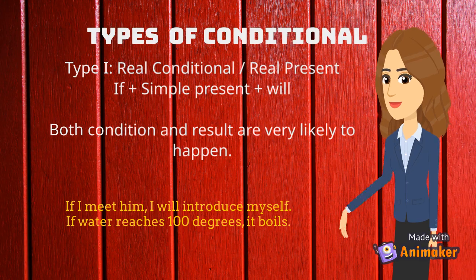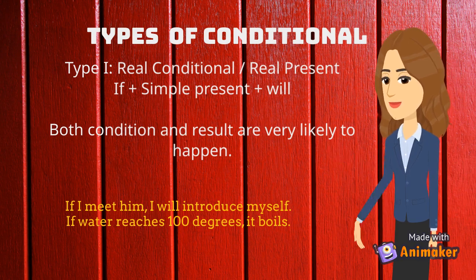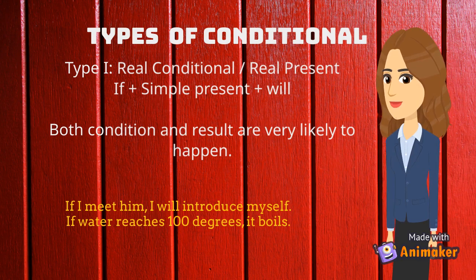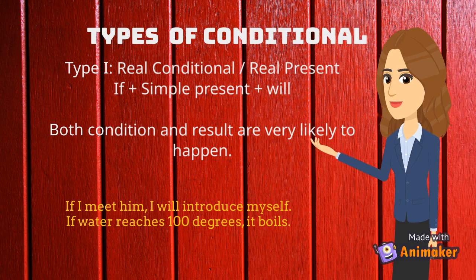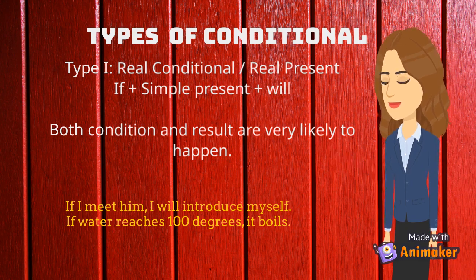There are at least three types of conditional sentences we are going to discuss today. The first type of conditional is called real conditional or real present. In this type of conditional, both condition and result are very likely to happen. The pattern for this type is: if + simple present + will. For example, 'if I meet him, I will introduce myself.' 'If water reaches 100 degrees, it boils.'